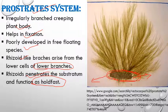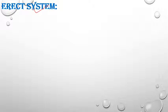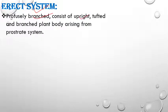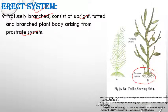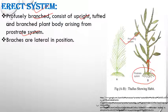The erect system is a profusely branched, upright projecting system which arises from the prostrate system. It bears various sporangia. The branches show some sort of dichotomy — one branch bifurcates into two. The tips of branches are pointed or tapered. In this image we can see the prostrate system giving rise to the profusely branched projecting system, with lateral branches.